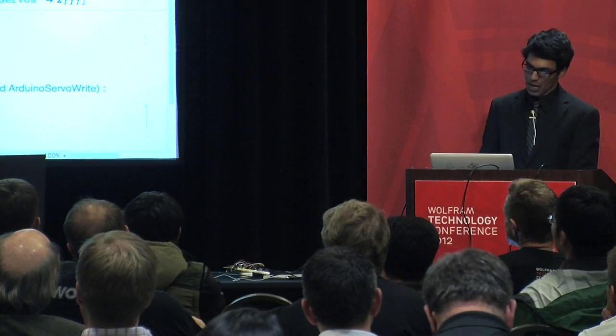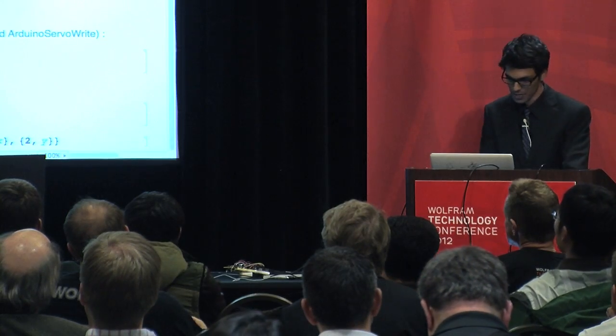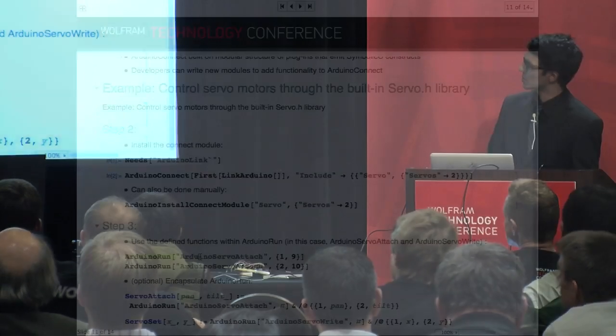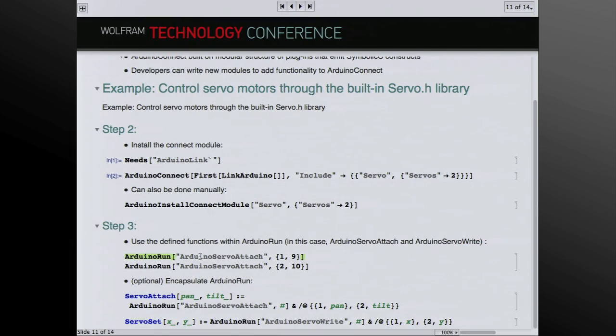So I'm going to run Arduino connect. And just like you saw before with Christopher's thing, I'm going to specify includes. And I'm going to include that library that I just created. Now this library is built into Arduino link. But any other library you made would follow the same general idea. So what's happening is it just created a Serial I.O. server that implemented the library and it uploaded it to the device. And there's also a manual way to do this with Arduino install connect module. And step three is to actually use these defined functions within Arduino run. So in this case, like Arduino servo attach or Arduino servo write. And you also have the option of creating a Mathematica symbol that just encapsulates Arduino run. So the general idea of Arduino run is you give a function name, the one that was defined in the connect module, and you give it whatever arguments that are sent to that function through Arduino connect input.